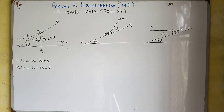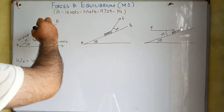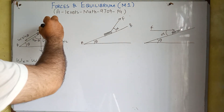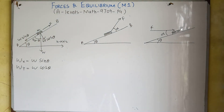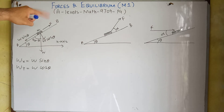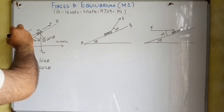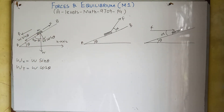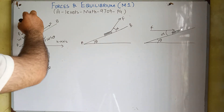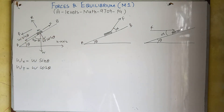Now let's suppose we are dragging this body of mass M towards point B with a force F. If we drag this body towards point B, there will be a frictional force opposite to this applied force. We also know that there will be a reaction (normal) force opposite to the weight and perpendicular to the direction of movement of this body — so this is the direction of the normal force.